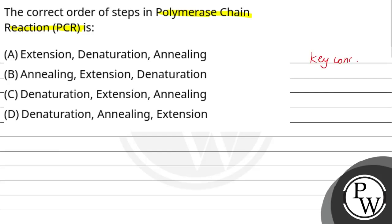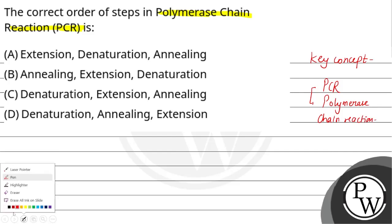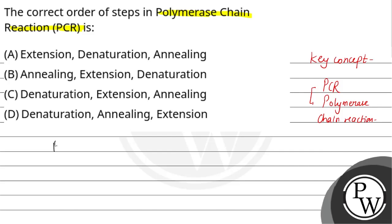Let's see the key concept of this question. PCR means polymerase chain reaction. It occurs mainly in 3 steps. PCR is a molecular technique which is used for the amplification of DNA, or we can say gene.